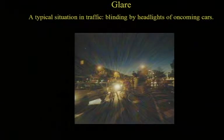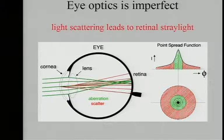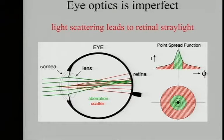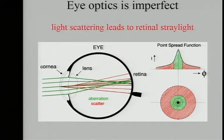Just a few introductory slides about the typical situation in traffic. The reason for glare is basically light scattering in the eye. Light scattering in the eye consists of two parts: light scattering per se, denoted by red lines, and light scattering over small distances, measured nowadays with wavefront sensing. We are talking about light scattering over large distances — over distances of one degree or more. That's the situation in traffic that we are concerned with.